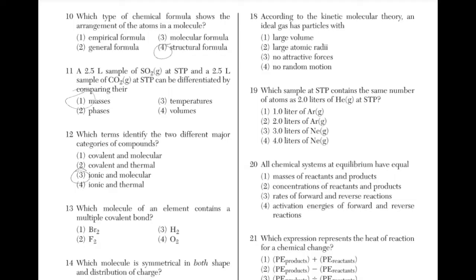Which molecule of an element contains a multiple covalent bond? If a single bond between the two elements does not give them each 8 electrons to complete their outer shell — except hydrogen — then a multiple covalent bond is present. Bromine and fluorine have 7 electrons in their outer shell. When a single bond is placed between two elements of fluorine or bromine, each element will have another 6 electrons around them, giving them each 8, completing the outer shell.